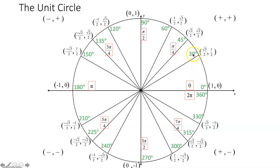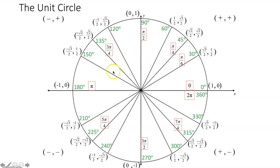Now we just need the radian measures that correspond with the multiples of 30 degrees. So let's start with 30 degrees — that's going to be π over 6. We know that because one full revolution is 2π radians, or 360 degrees, and on that interval from 0 to 2π there are 12 different angles that are multiples of 30 degrees. So to figure out the radian measure for one 30-degree angle, I just take 2π, divide it by 12, and get π over 6. That represents one 30-degree angle rotation in radians.